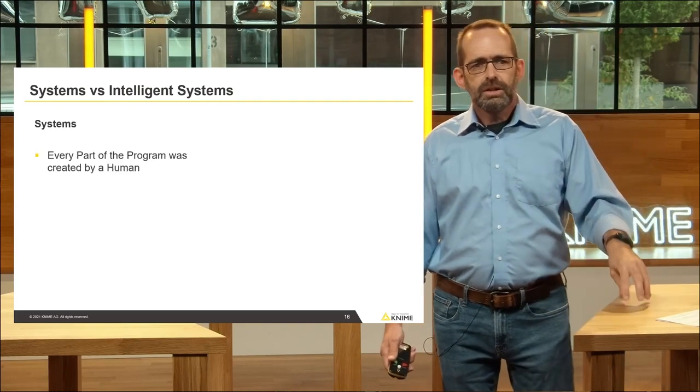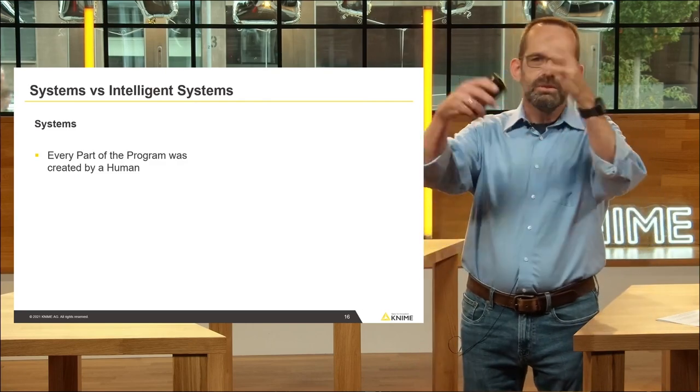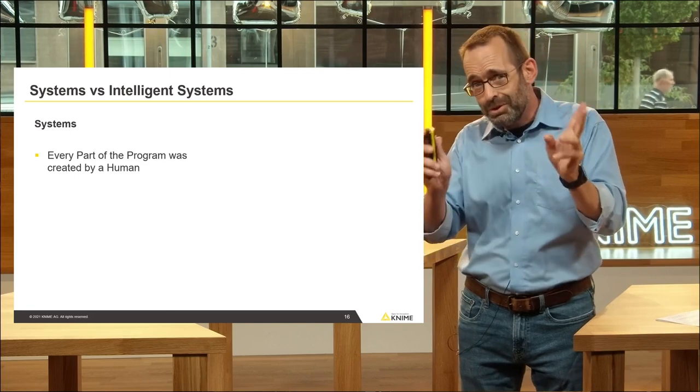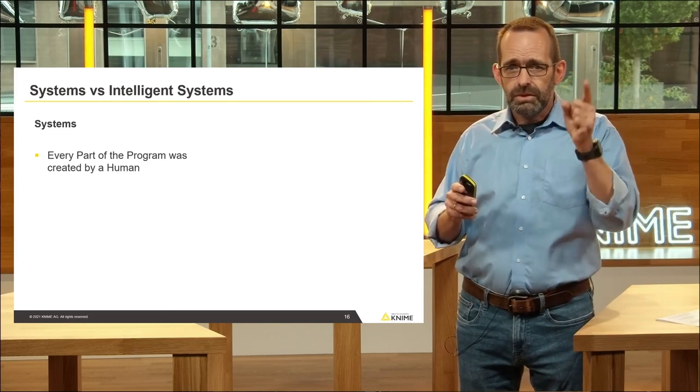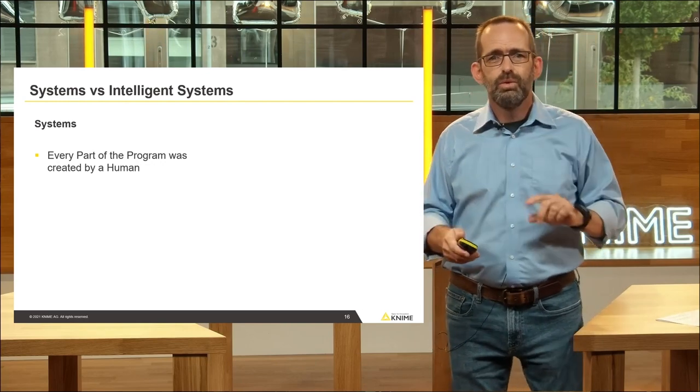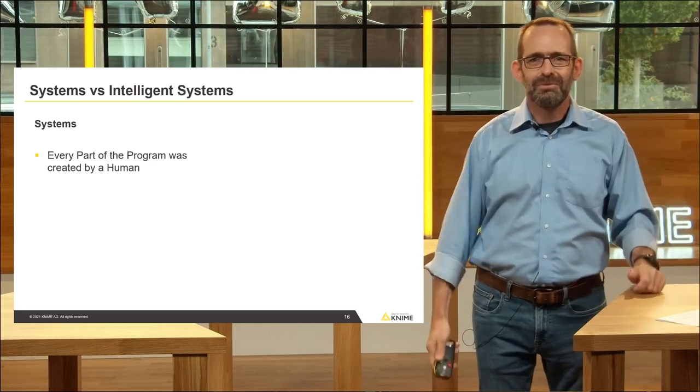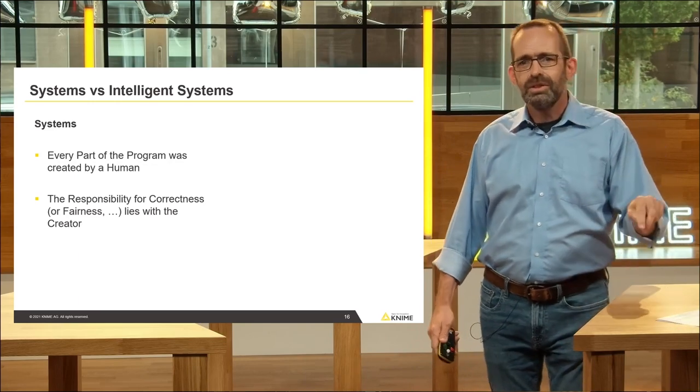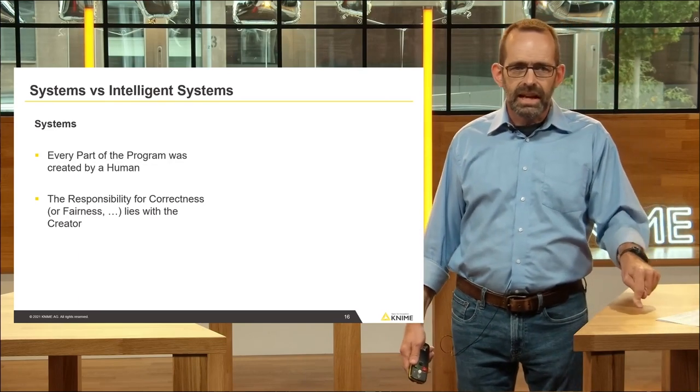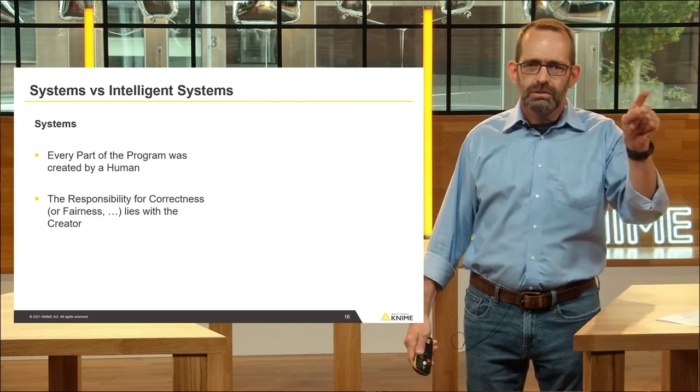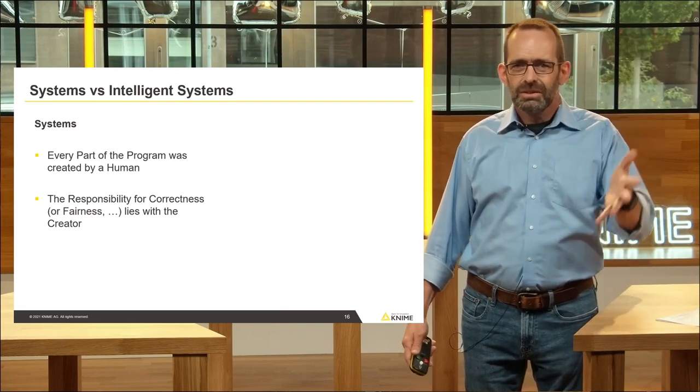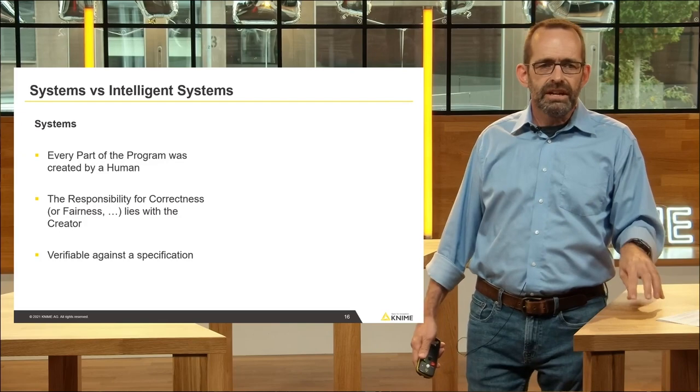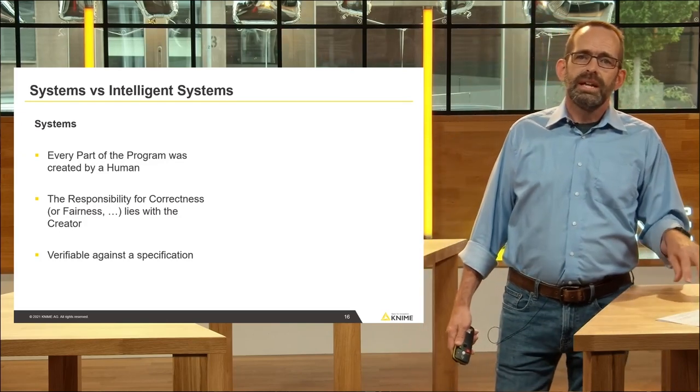Let's look at the three properties: systems versus these intelligent systems, this AI stuff. Systems - every part of that program was created by a human. It can be different humans working together in large teams, whatever, but at the end of the day, I can go back to every line of code and say this, ideally, if I have a good system that allows me to do that, I can go back and say, this was written by Fritz, this was written by Jim, and I know who to blame for problems there or maybe also praise for cool stuff being done there. The responsibility for the correctness or fairness or that it does the right thing, whatever that means, in the end lies with that creator. But Fritz, we told you you needed to write something that does this. It's not doing that. So something between specification and what you implemented just doesn't work. So we can, at least in theory, verify that it's doing what we wanted it to do against the specification.